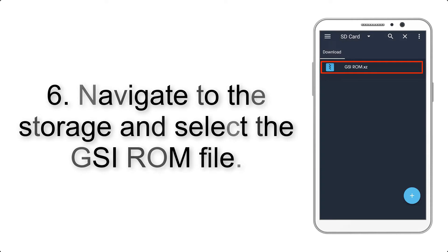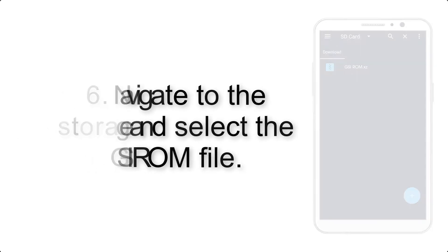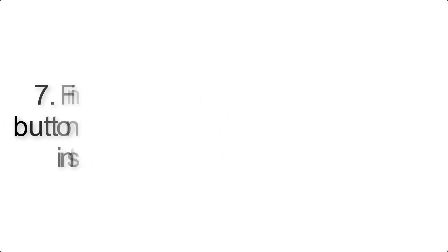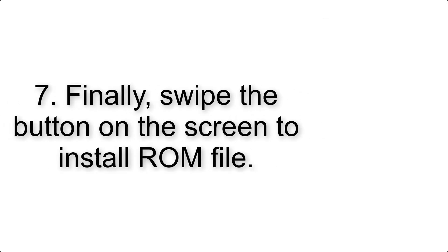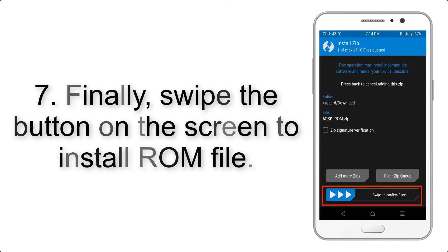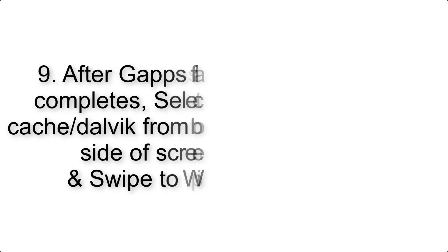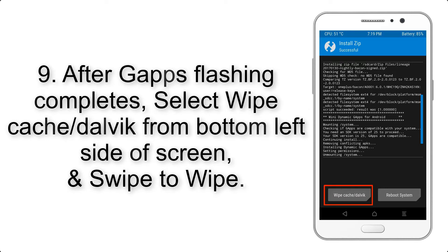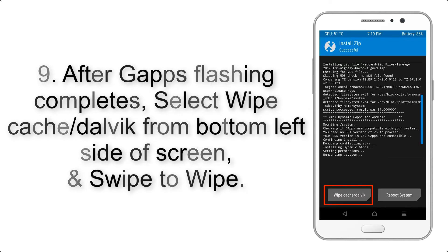Step 5: Go back to the recovery main screen and tap on the Install button. Step 6: Navigate to the storage and select the GSI ROM file. Step 7: Finally, swipe the button on the screen to install the ROM file.